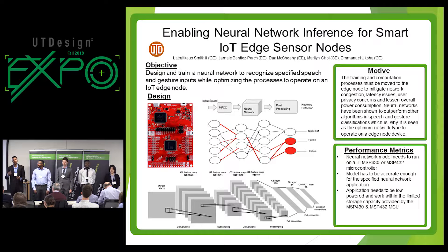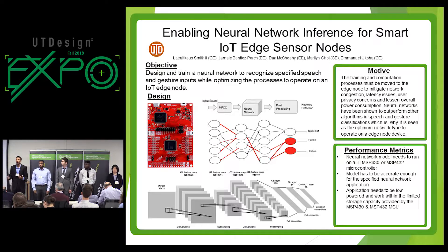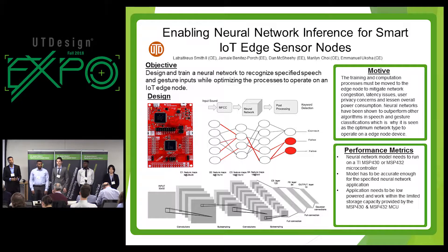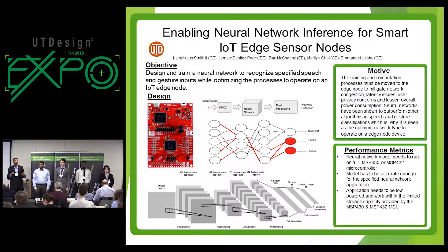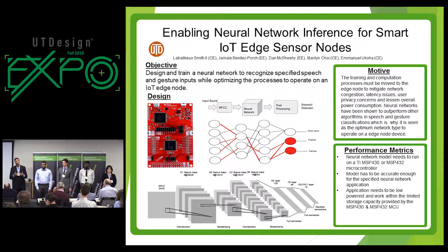Edge nodes act as a bridge between an end device and a network, providing information from the end device to the network, and then providing functionality from the network back to the end device. Edge sensor nodes take an input in the form of speech commands and touchscreen gesture-based commands, and then send it to the cloud-based environment, where it's processed and analyzed, and the respective response or action is then sent back to the edge sensor node.